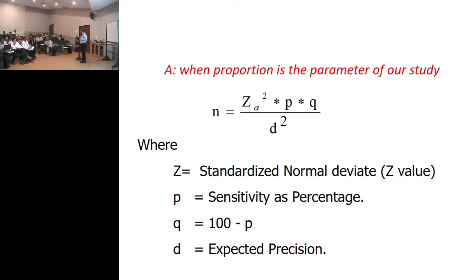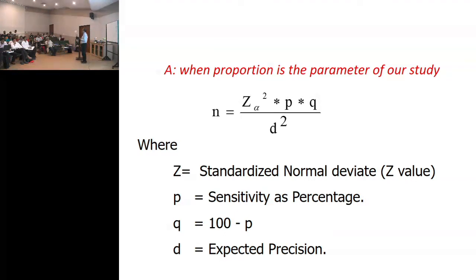Otherwise it seems a bit expensive. So mostly we suggest first doing a case control study approach, because you know who is a case and who is a non-case. You have plenty of non-cases — take a sample of 64 and do it.